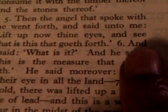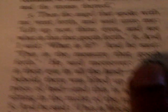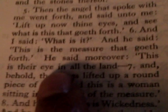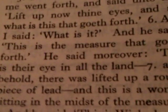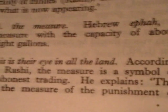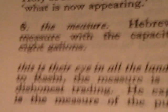But let's look at what the Hebrew — the Jewish translators have. And I said, what is it? And he said, this is the measure, the ephah, that goeth forth. He said, moreover — get this — this is their eye. This is their eye. You see that right there? This is their eye in all the land. Let's look at the footnote down here. The footnote says 'this is their eye in all the land.' It says, according to Rashi, the measure is a symbol of dishonest trading.